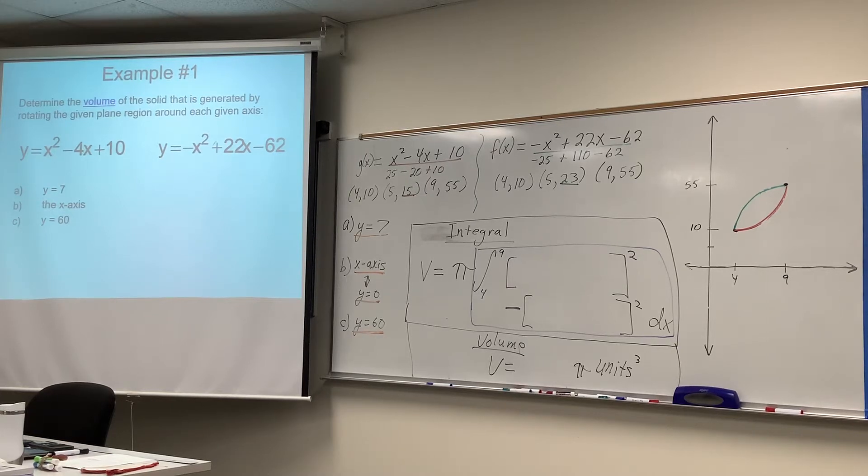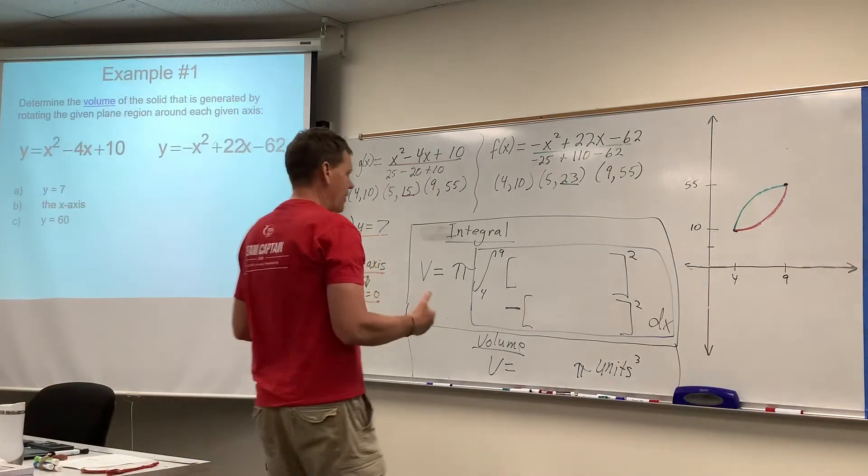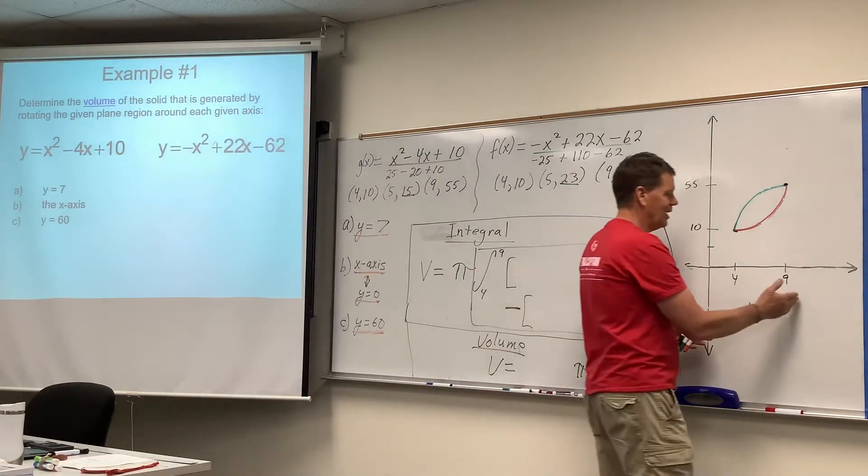All right, so here we go. Example number one, part C. We still have our two curves. We identified they cross at four and nine. That's not going to change at all.